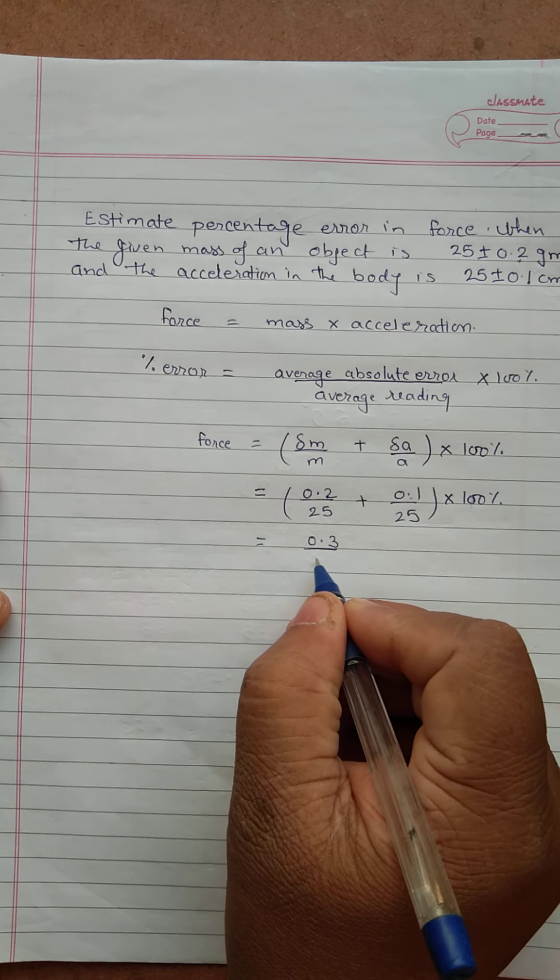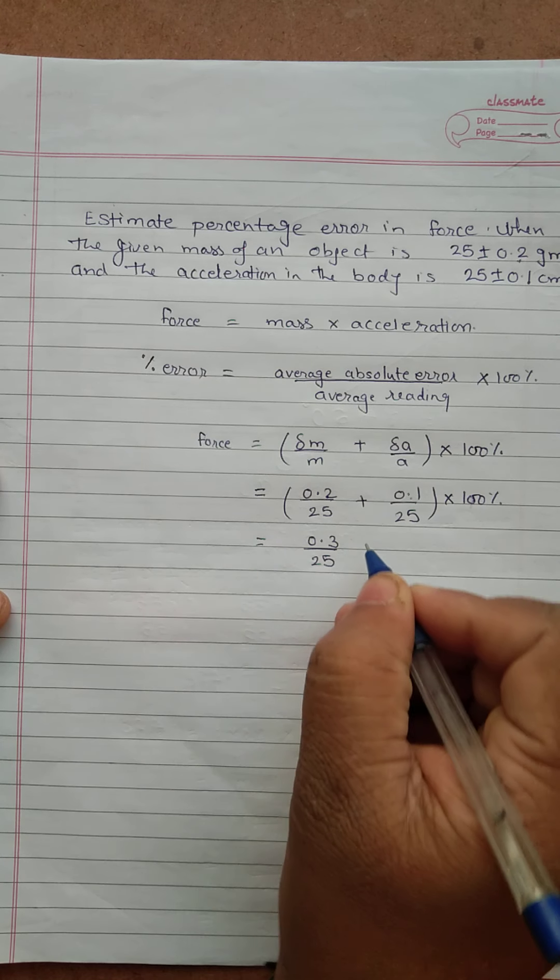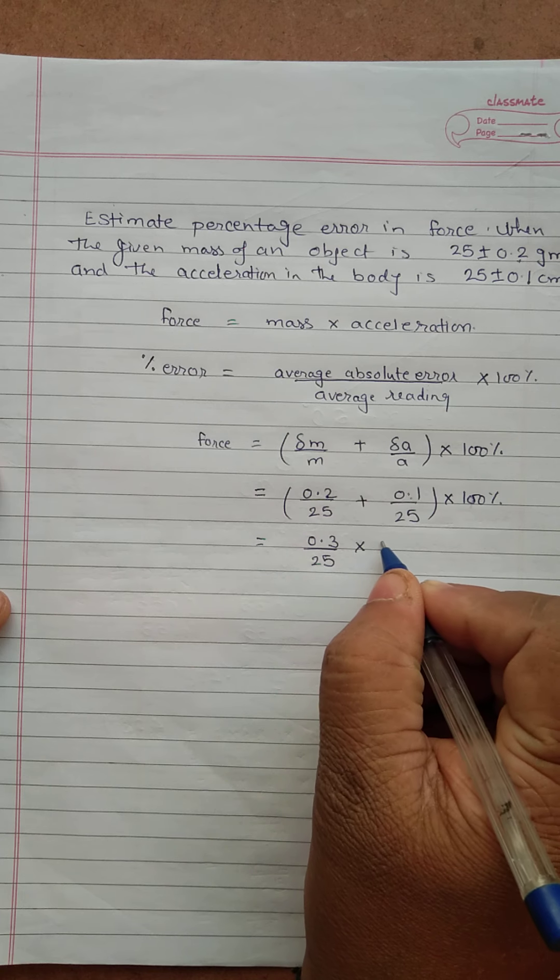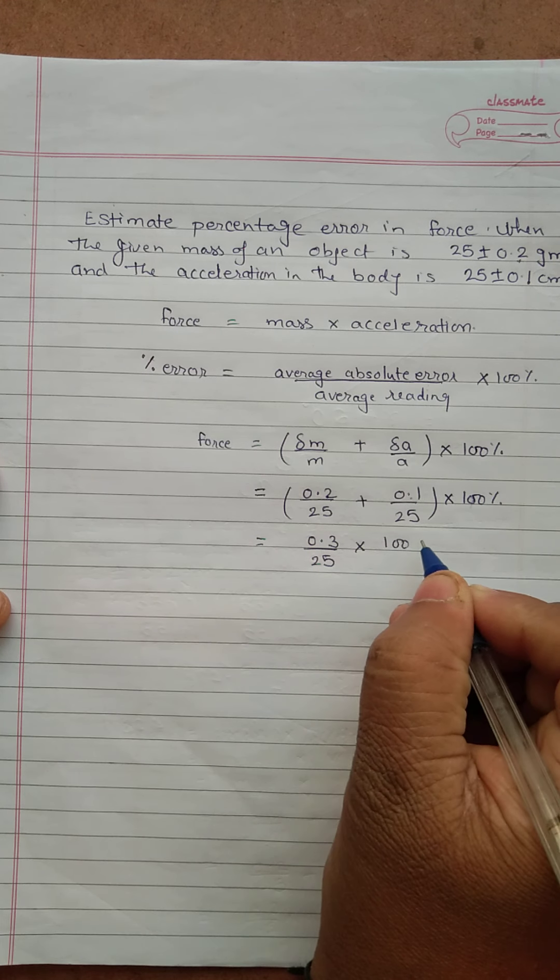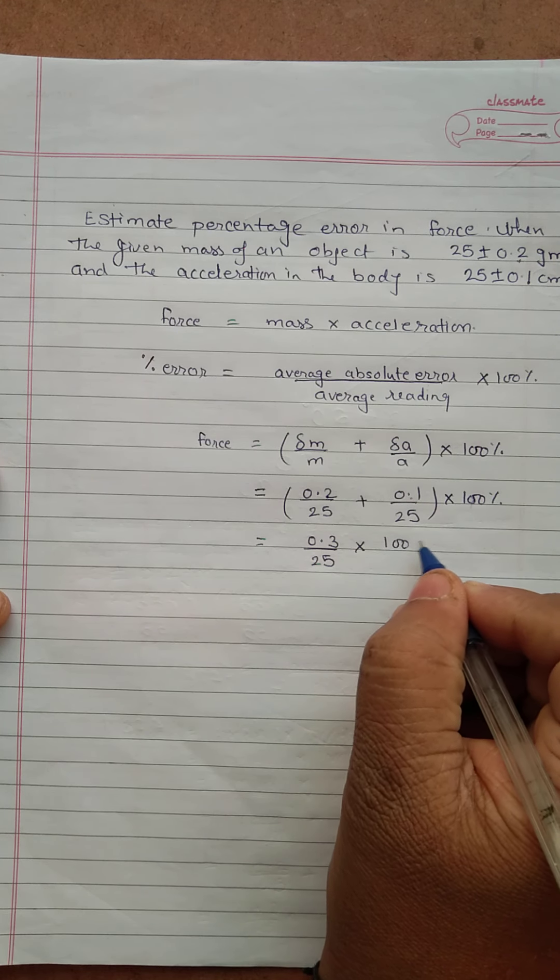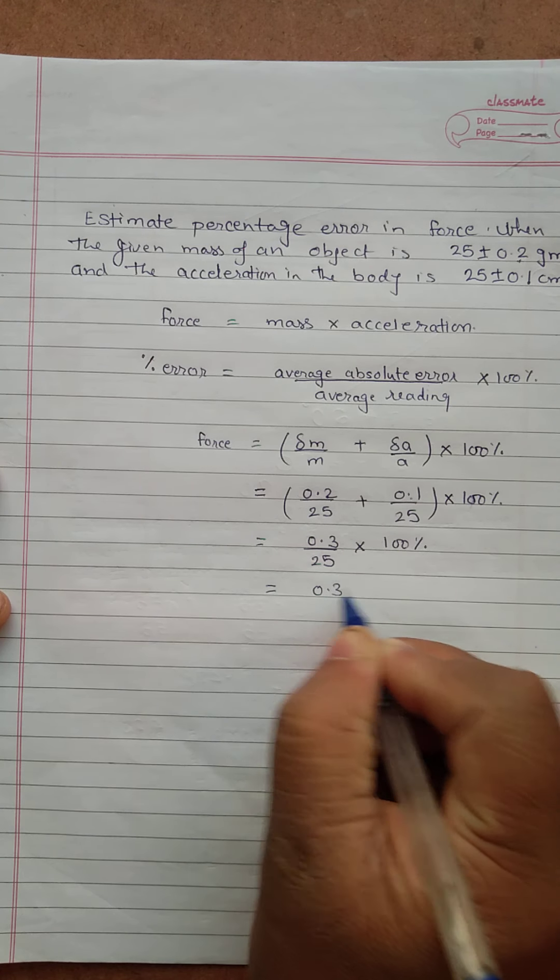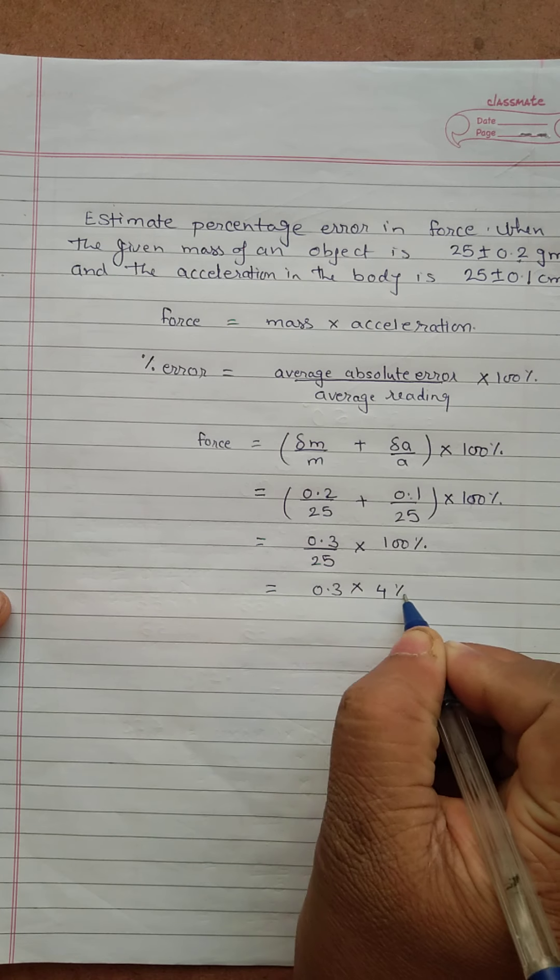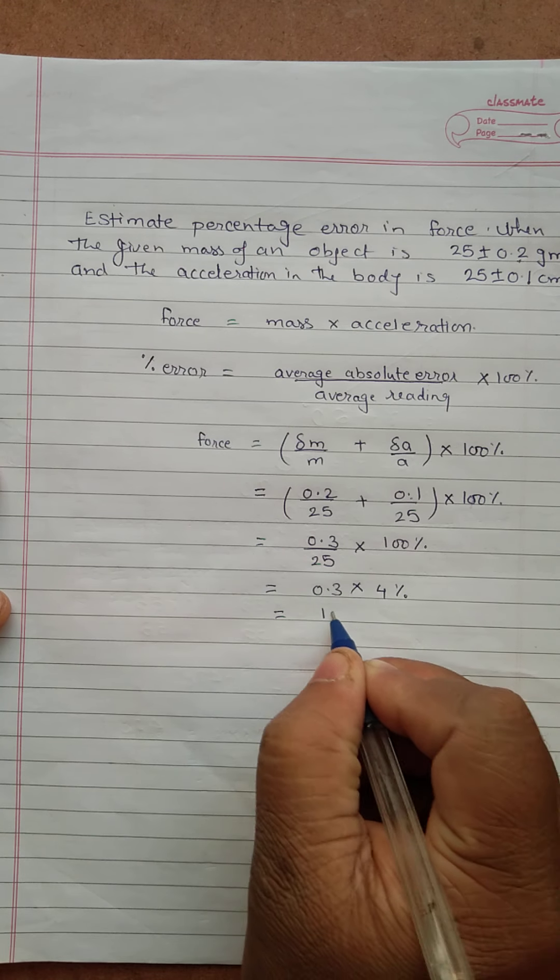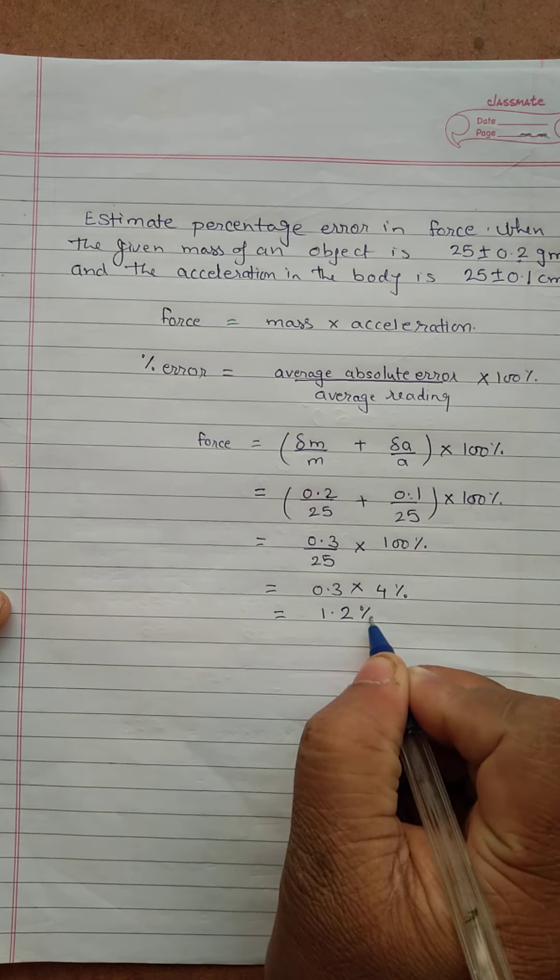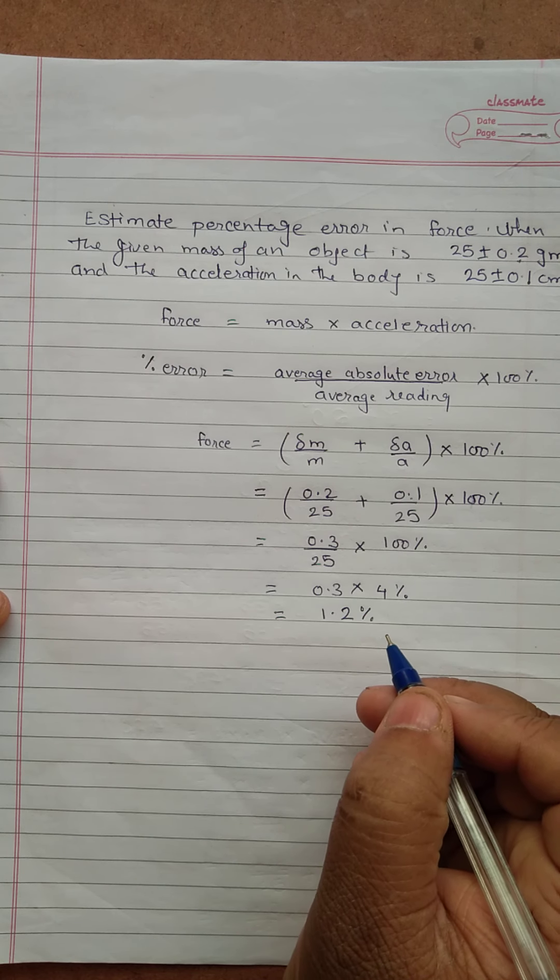We know that denominators are same, so we will write it as 0.3 upon 25 into 100 percent. So we will write it as 0.3 into 4 percent, or the answer of percentage error in force is 1.2.